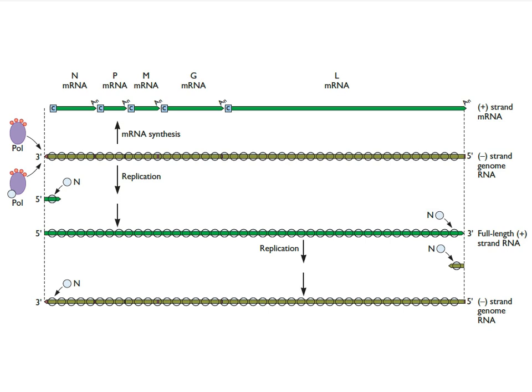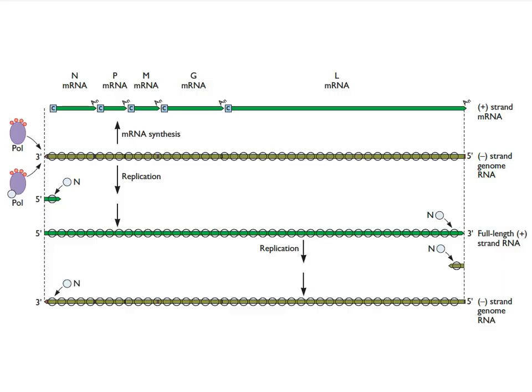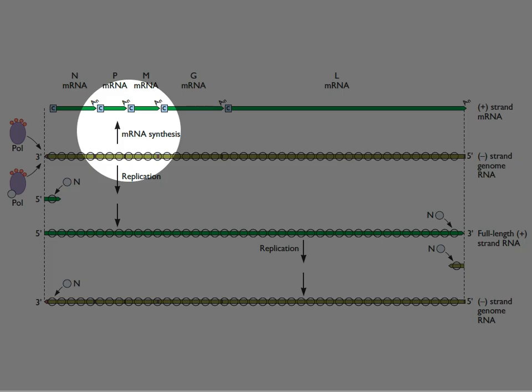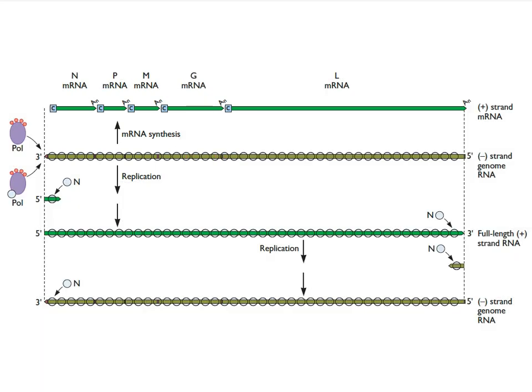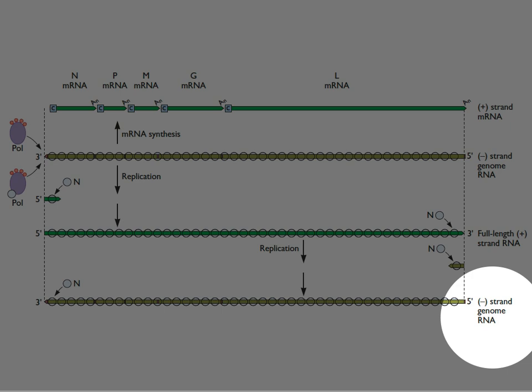Here's another view: the negative strand genome RNA in olive color comes into the cell, and the first thing that happens is you make mRNAs — one, two, three, four, five — each encoding a different protein. After an hour or two or three hours, you have a lot of proteins in the cell and you have to start making virions. You can't make a genome from these mRNAs — they're too short. So the virus switches to replication: it makes a plus strand full-length copy, and then from that it makes a negative strand.